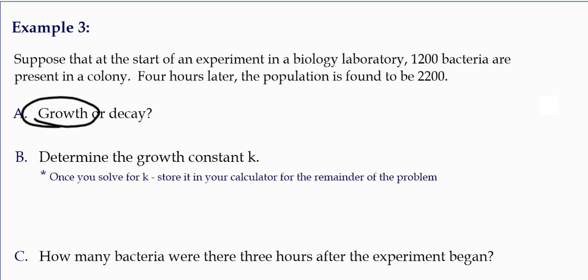So to determine the growth constant, we're going to set it up into the formula. The final amount, 2,200, equals the initial amount times e to the kt. We don't know k, but we do know that t is four hours later. So it's 1,200 e to the 4k.